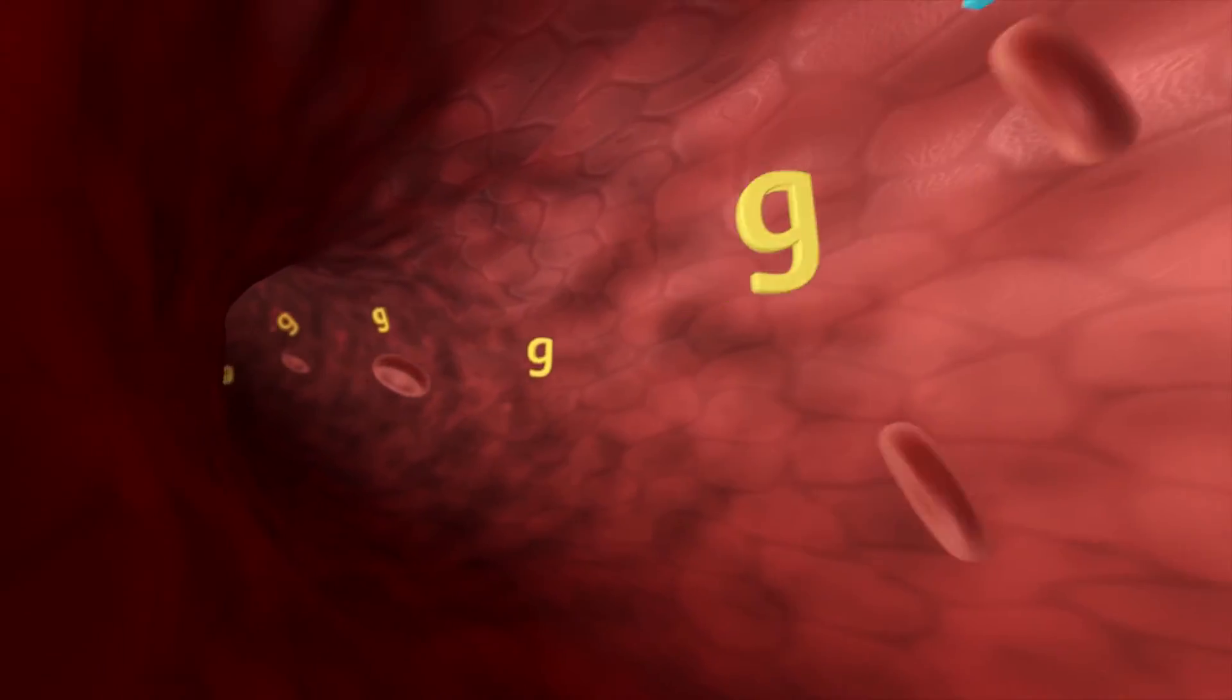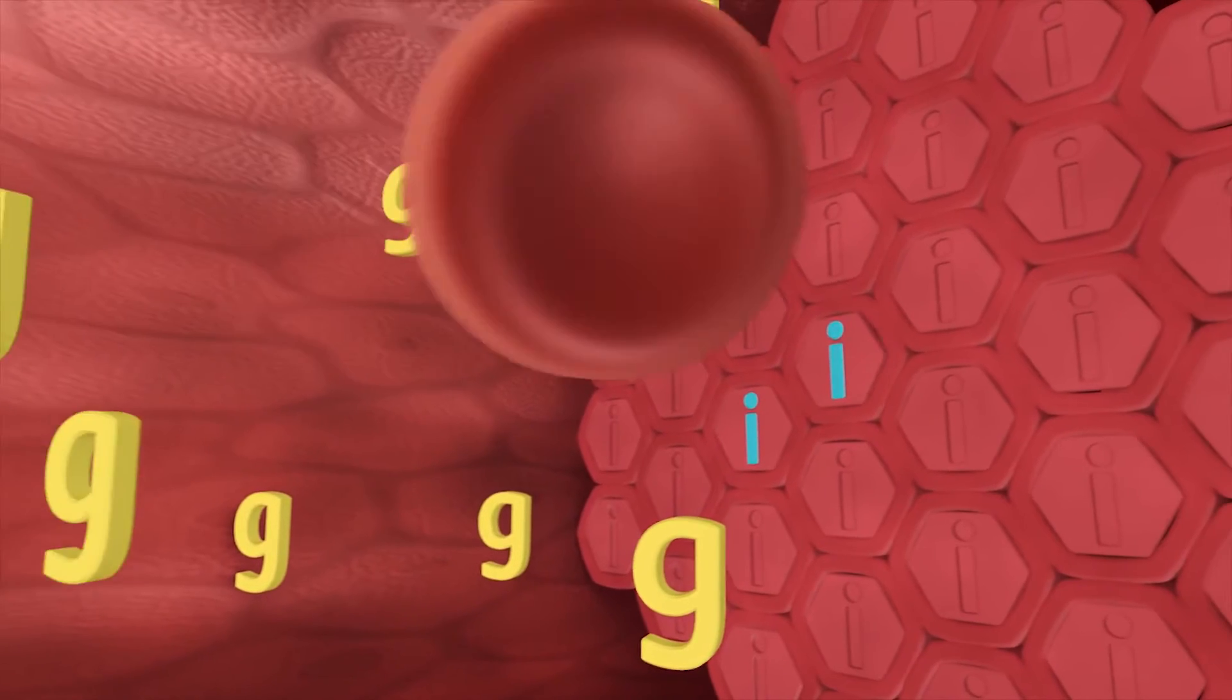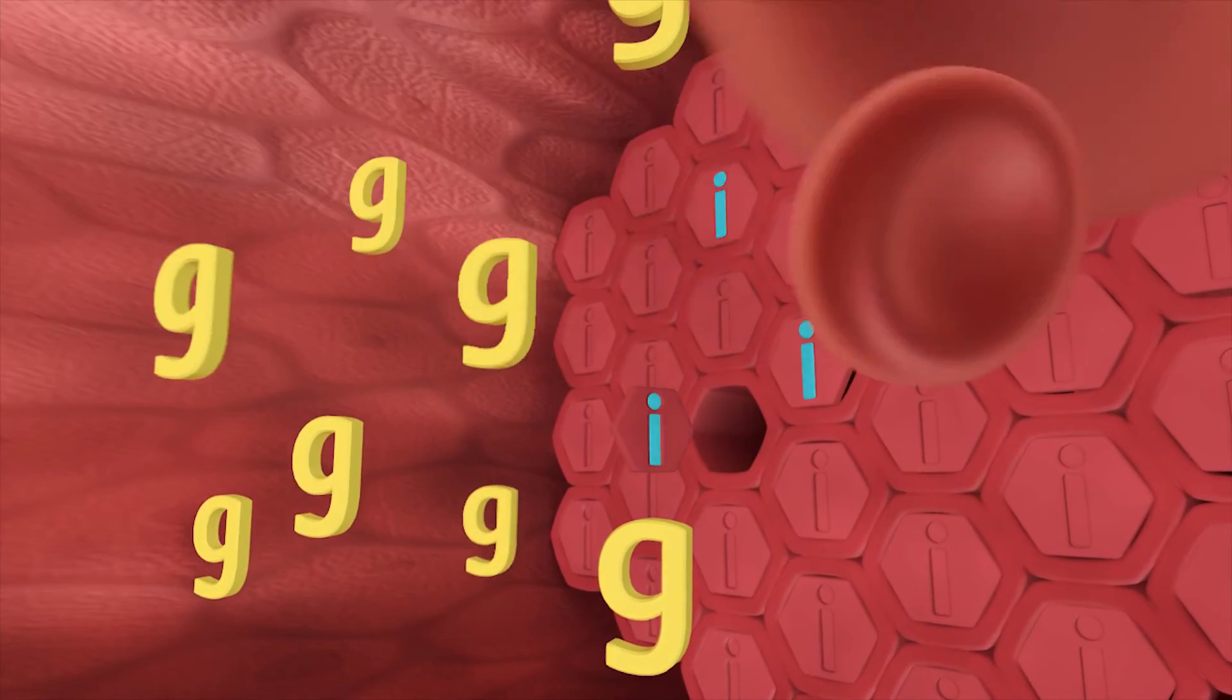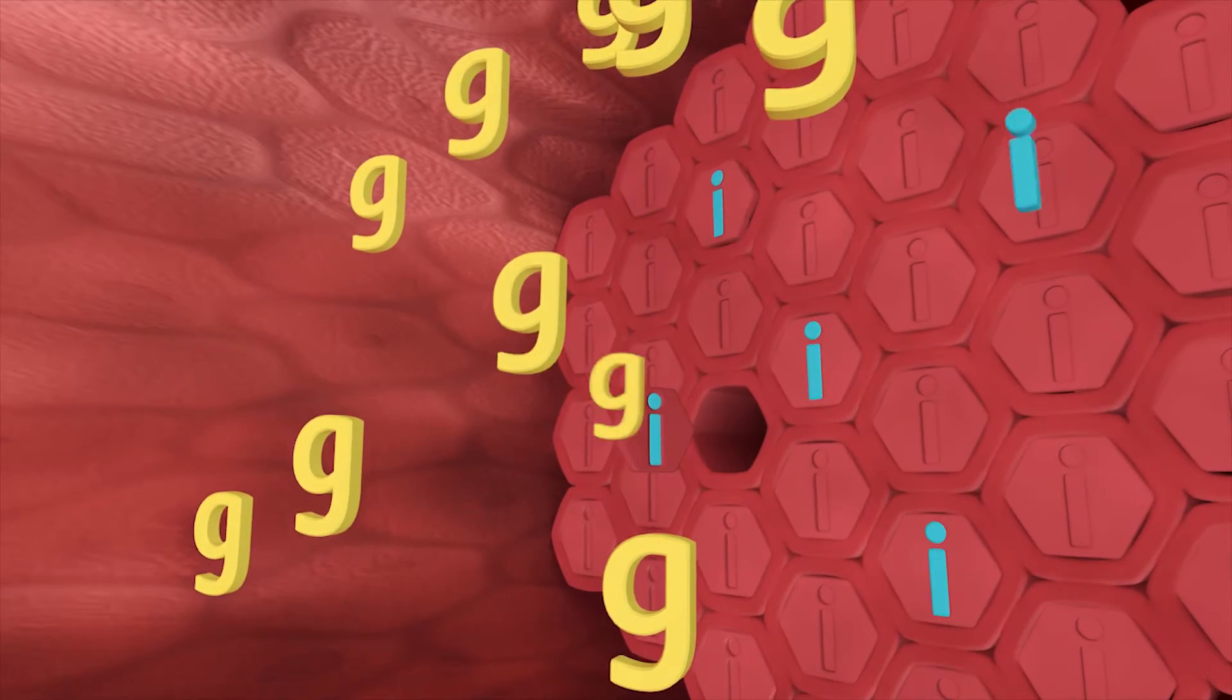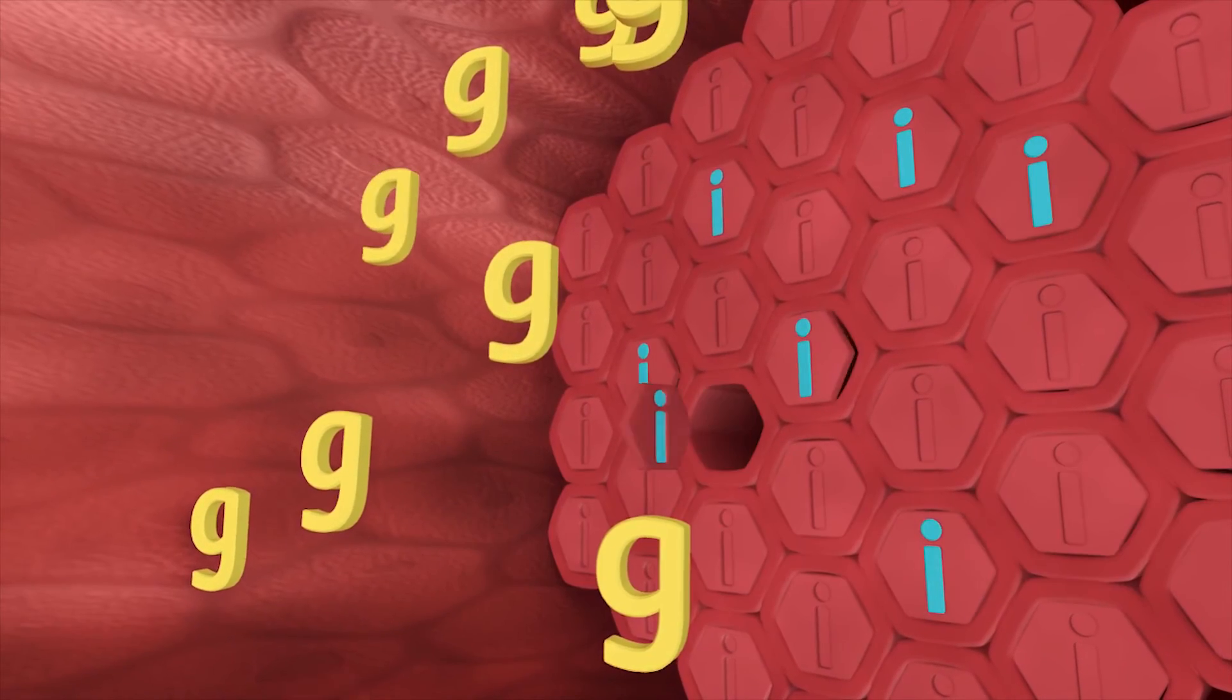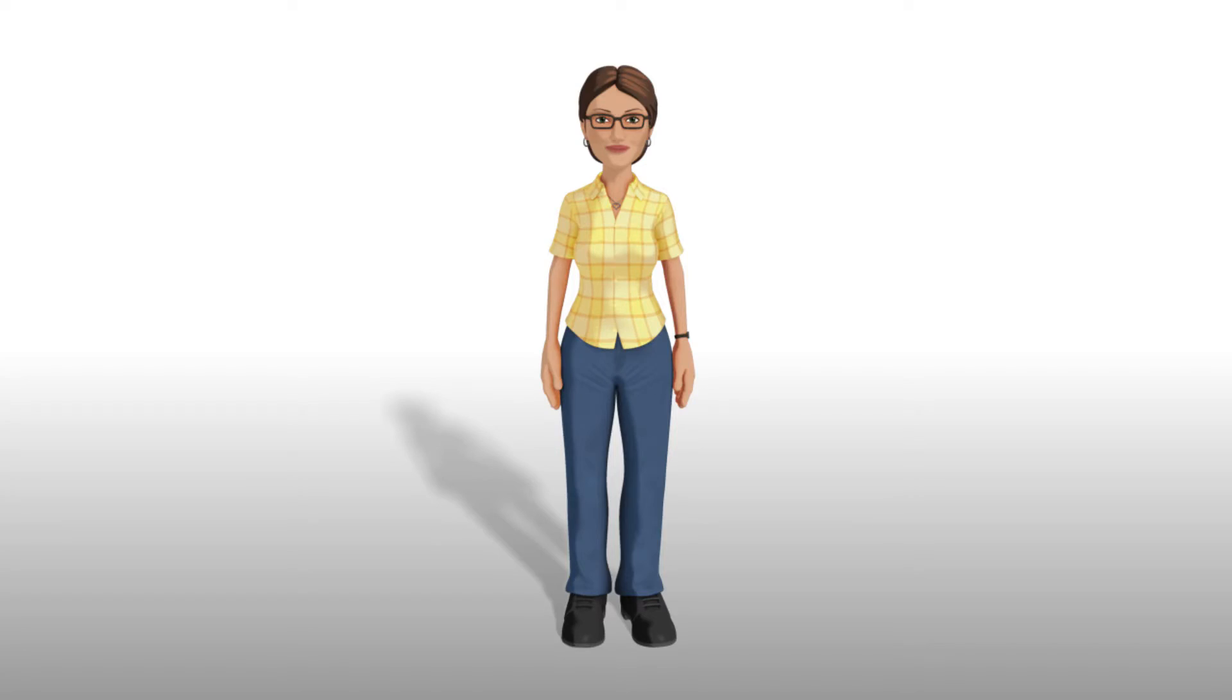In type 2 diabetes, the body either does not produce enough insulin and/or the insulin is not working well. This is called insulin resistance. Insulin resistance means the cell doors are resistant to insulin and not opening when insulin tries to be the key. To help insulin work more effectively, type 2 diabetes can be managed by healthy eating, regular exercise, and in some cases medication. Some people with type 2 diabetes will require insulin injections to manage blood glucose levels.